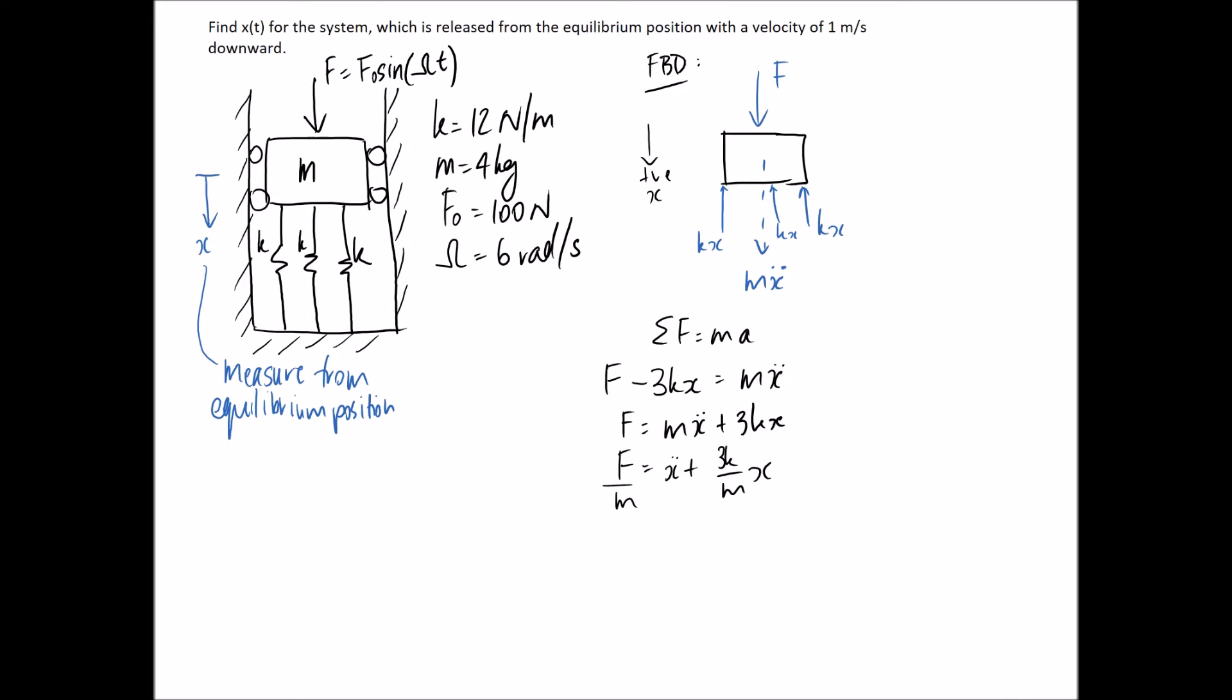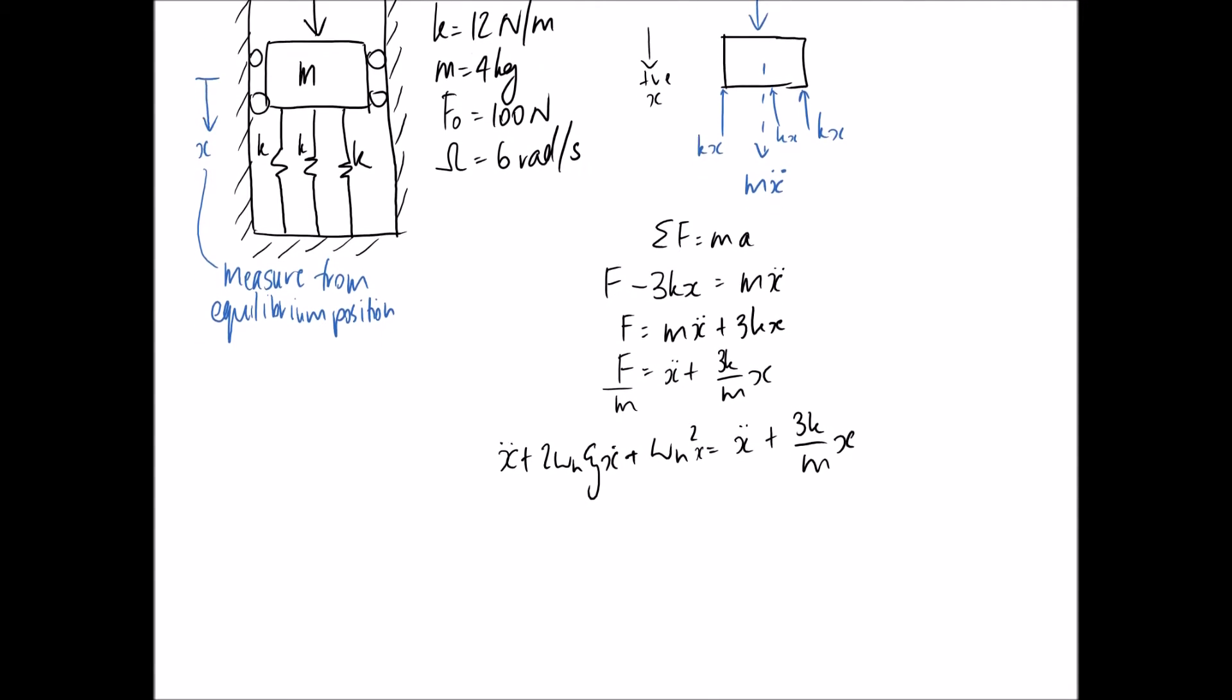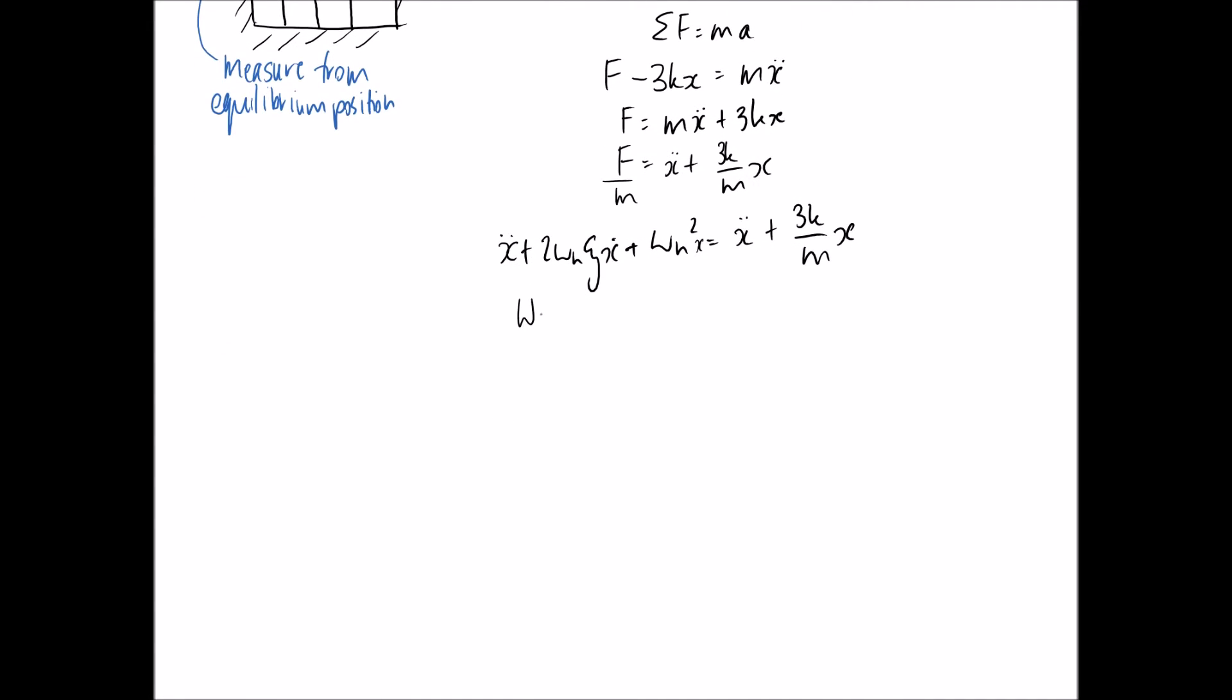Now I'm probably going to want to find what my natural frequency and damping ratio are. So I have that x double dot plus 2 omega n zeta x dot plus omega n squared has to equal this part here. So the 1 in front of here equals the 1 in front of here. That means that x dot part has to equal the x dot part on this side, which is actually 0 since we don't have one there. This should have an x in it. So the omega n squared x part has to equal 3k on m x as well.